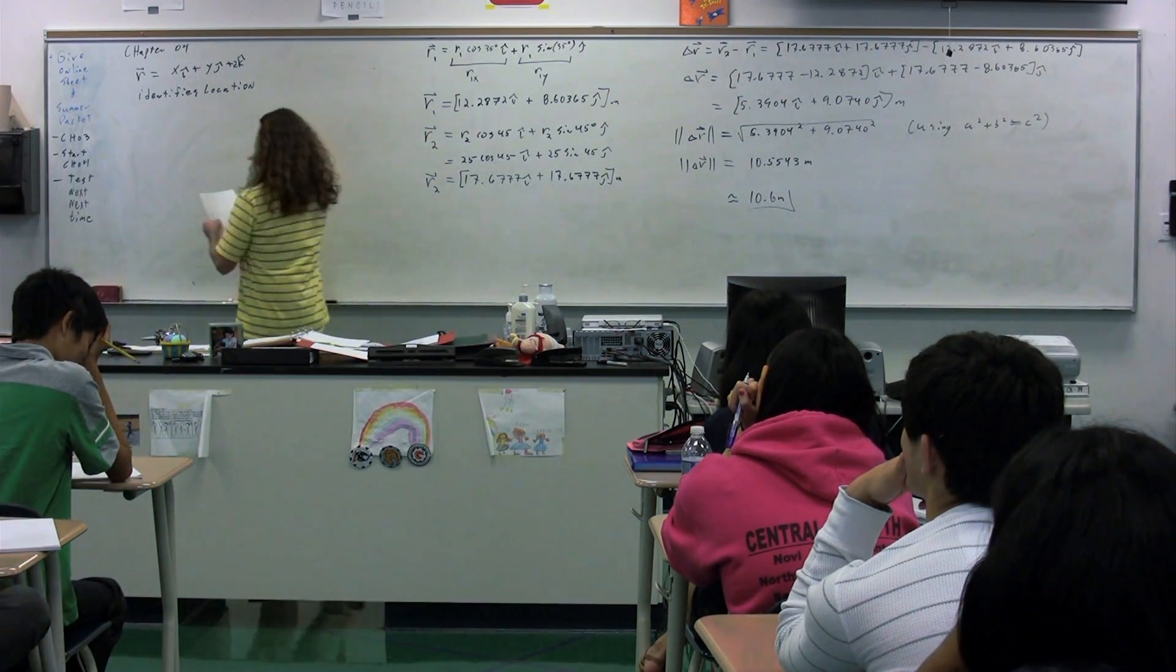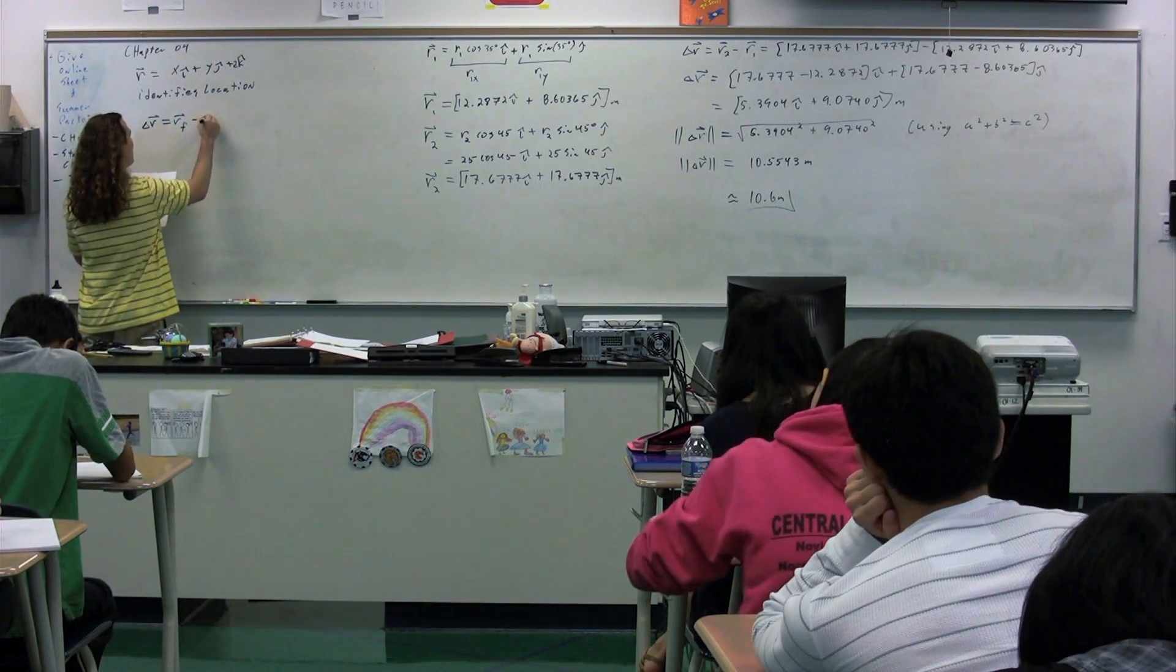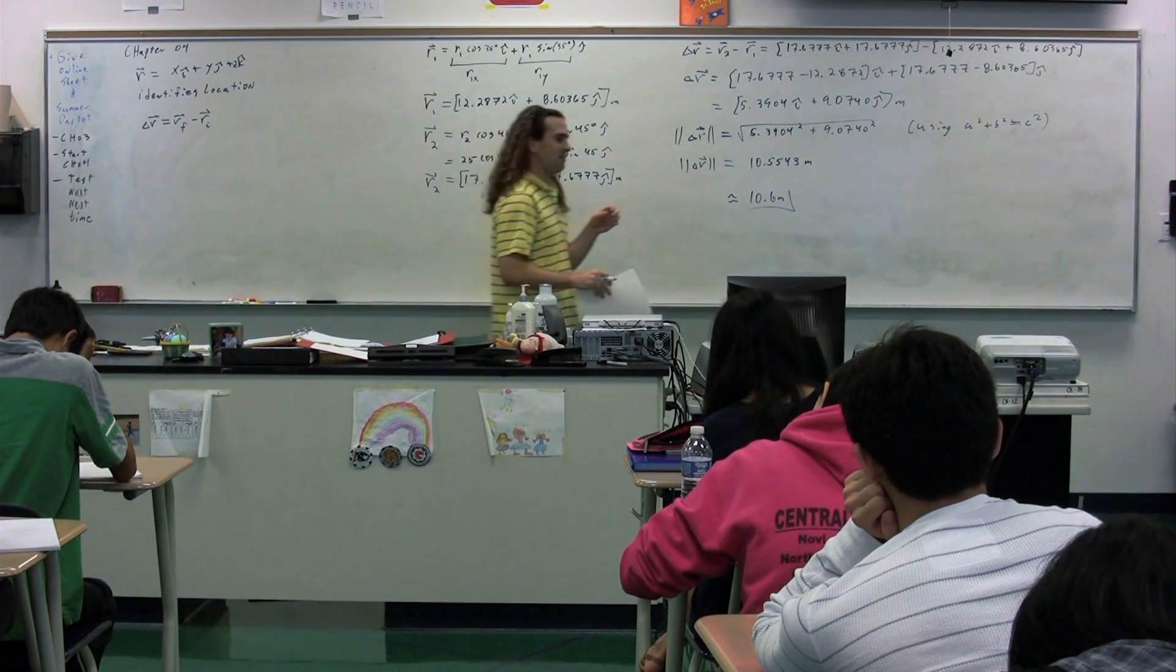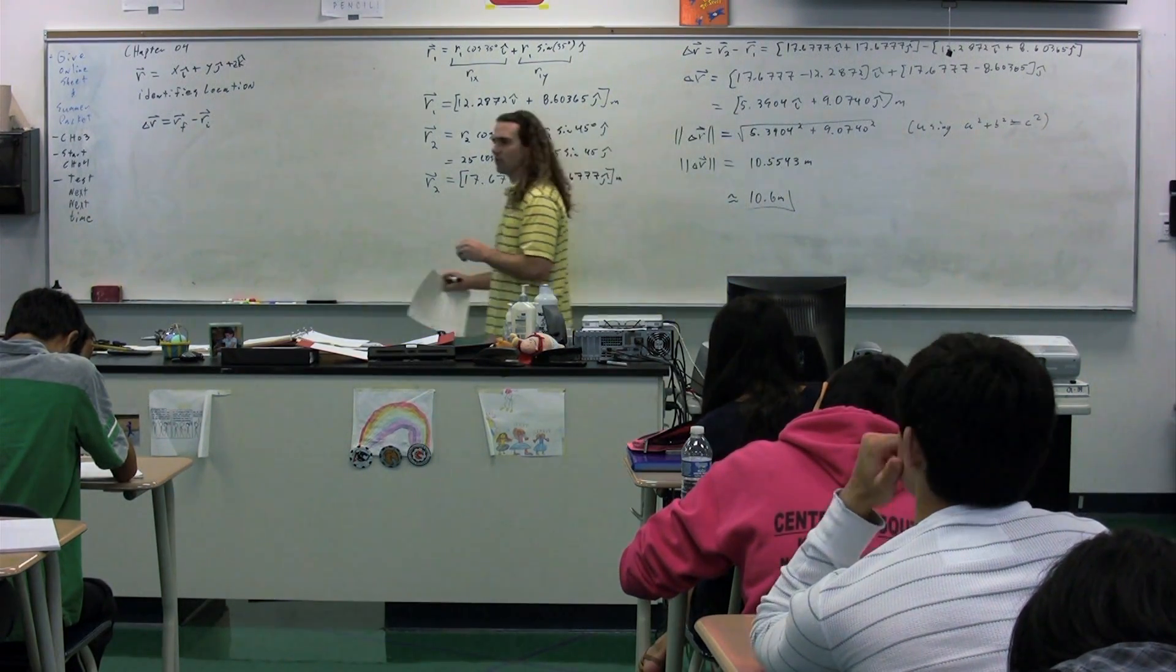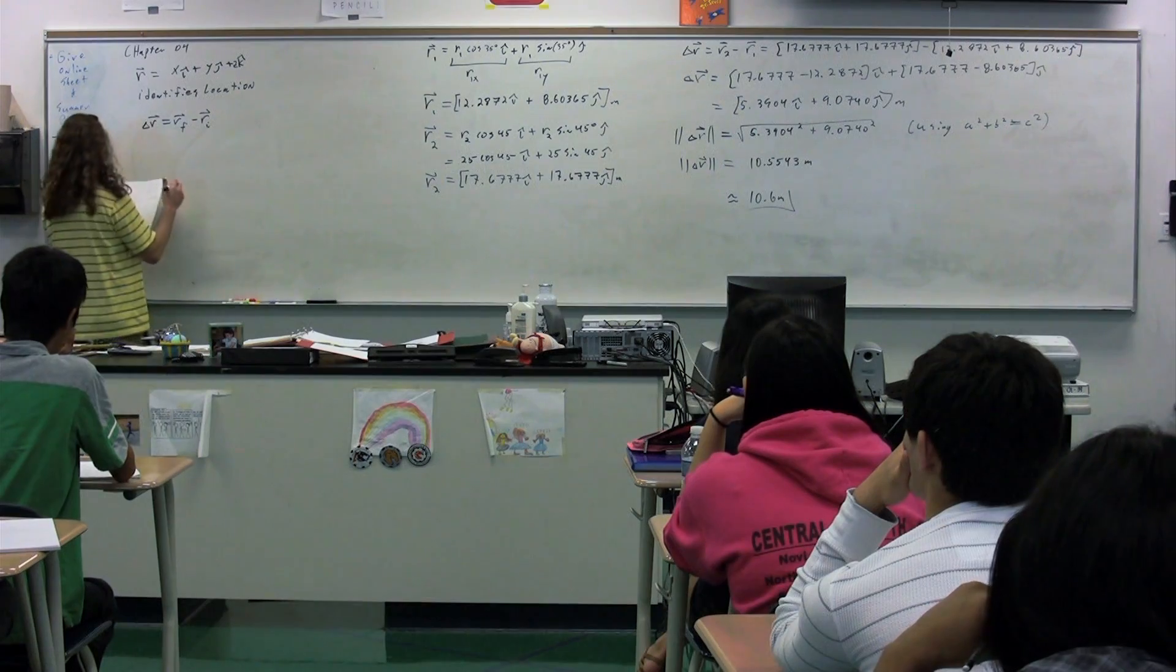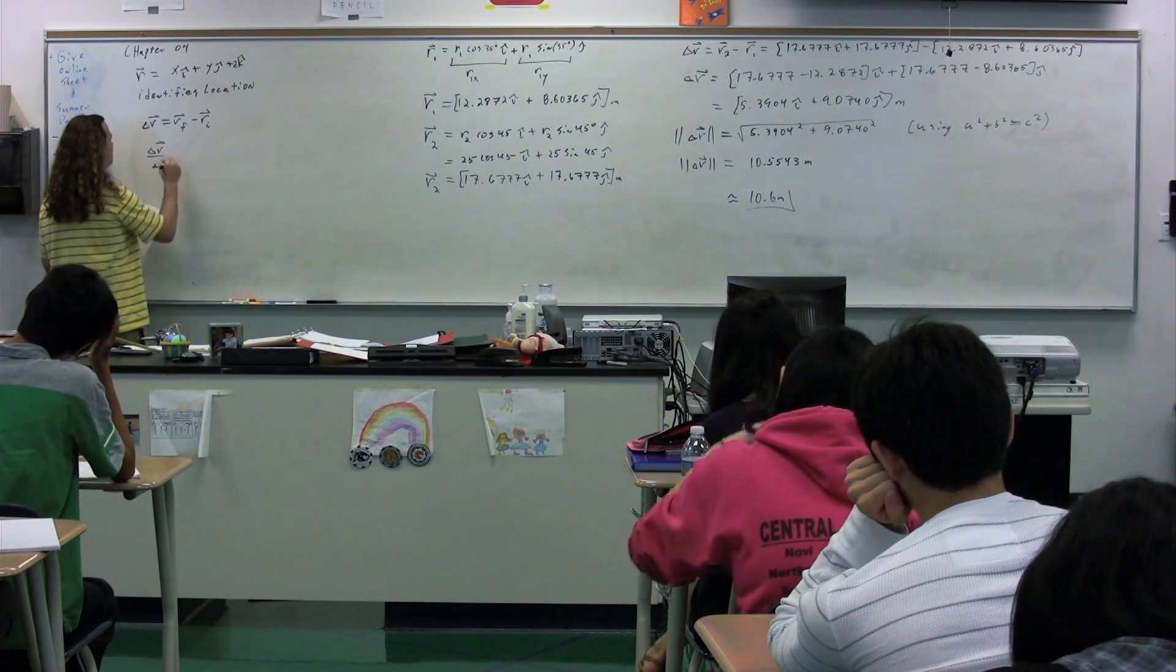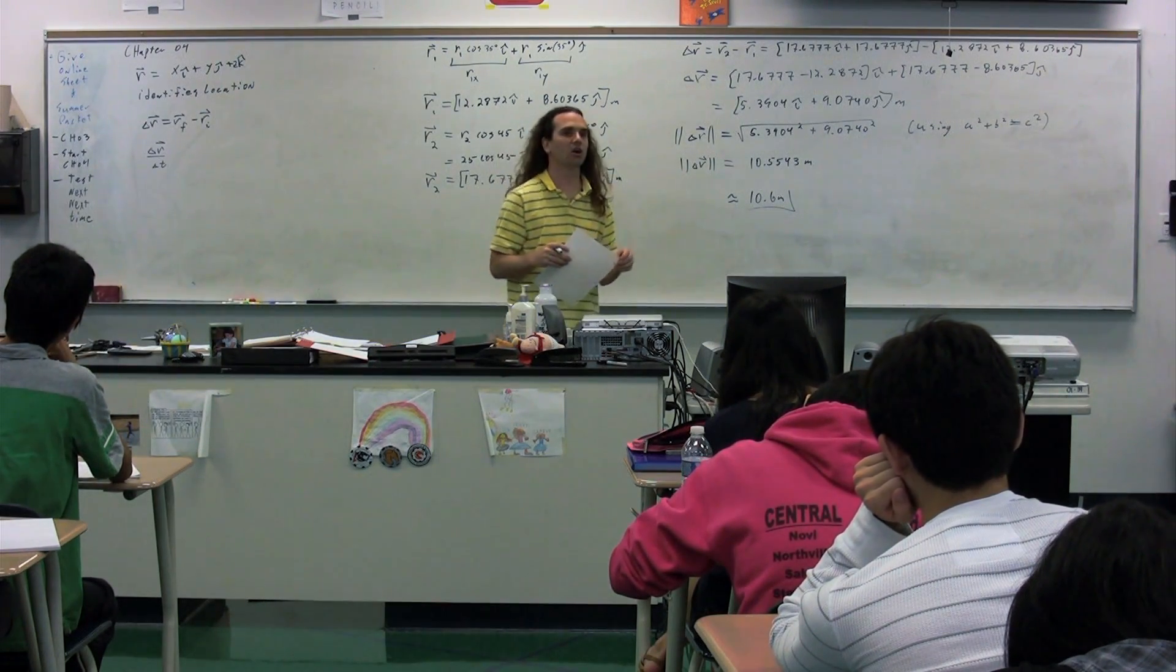So we have, just as we walk through, delta r, which is going to be the final minus the initial position vector. So notice that rather than having just an x position or a y position or a z position, we have to combine them all into one vector, the position vector r. So we can have something called delta r over delta t. What would that be called?